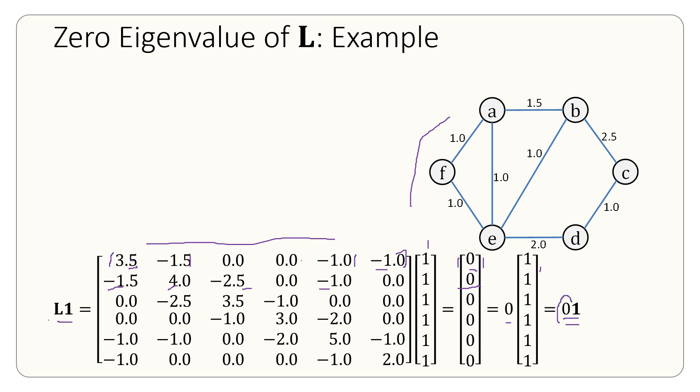So this 0 is, by definition, an eigenvector and this 1 is the eigenvalue. Now this 1 has not been normalized. Normalizing it, we will get lambda 1 equals 0 and v1 equals 1 over square root of 6 times 1. All we did is take 1 and divide it by the length of this 1, its L2 norm, which is square root of 6.